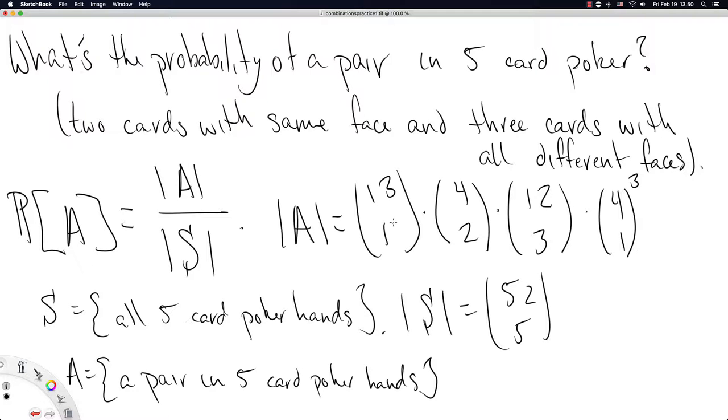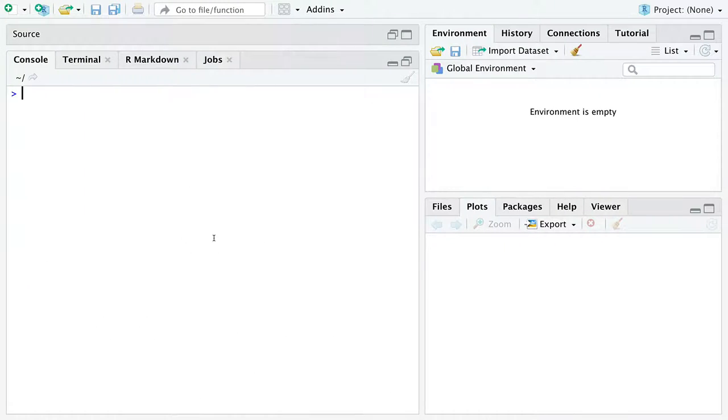This is the cardinality of A, the set of hands with a pair in five-card poker—the number of ways to get a pair. Now if we calculate this fraction, we can find the probability of a pair. I'll use R to do that next. In R, we can represent the combination operation as 'choose.'